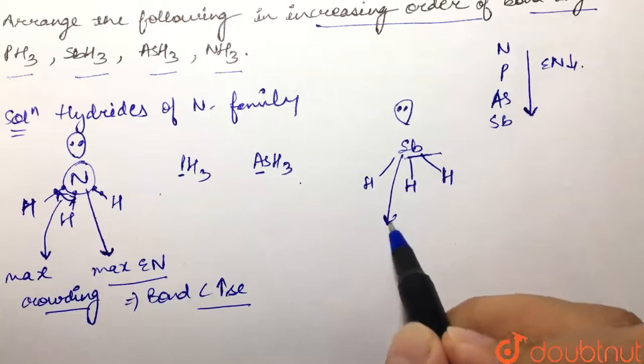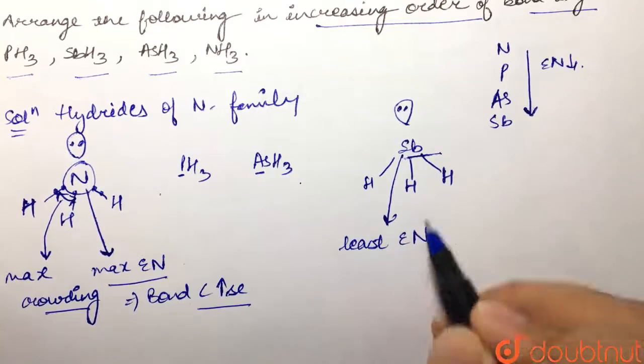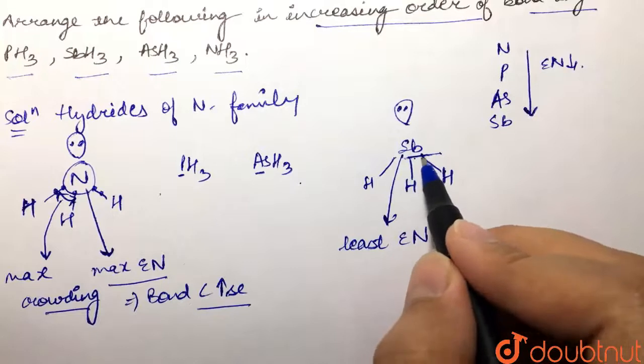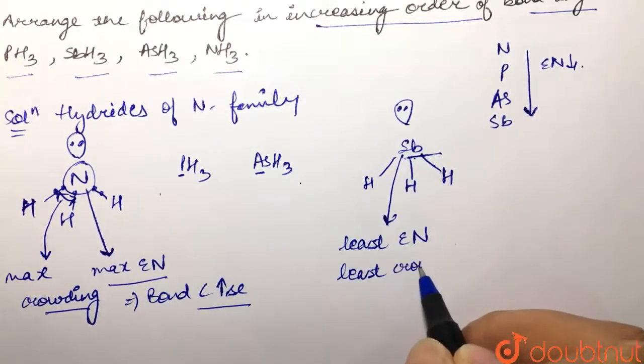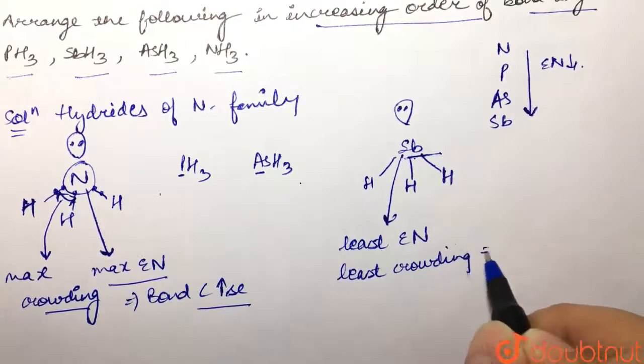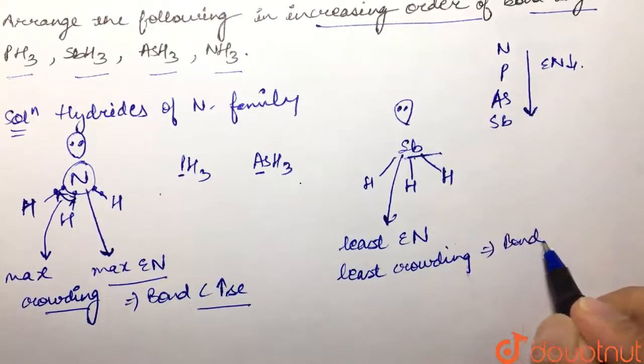This is least electronegative, and it would have least tendency to attract the shared pair of electrons towards itself. So we would have least crowding over here, and that is how our bond angle would be least.